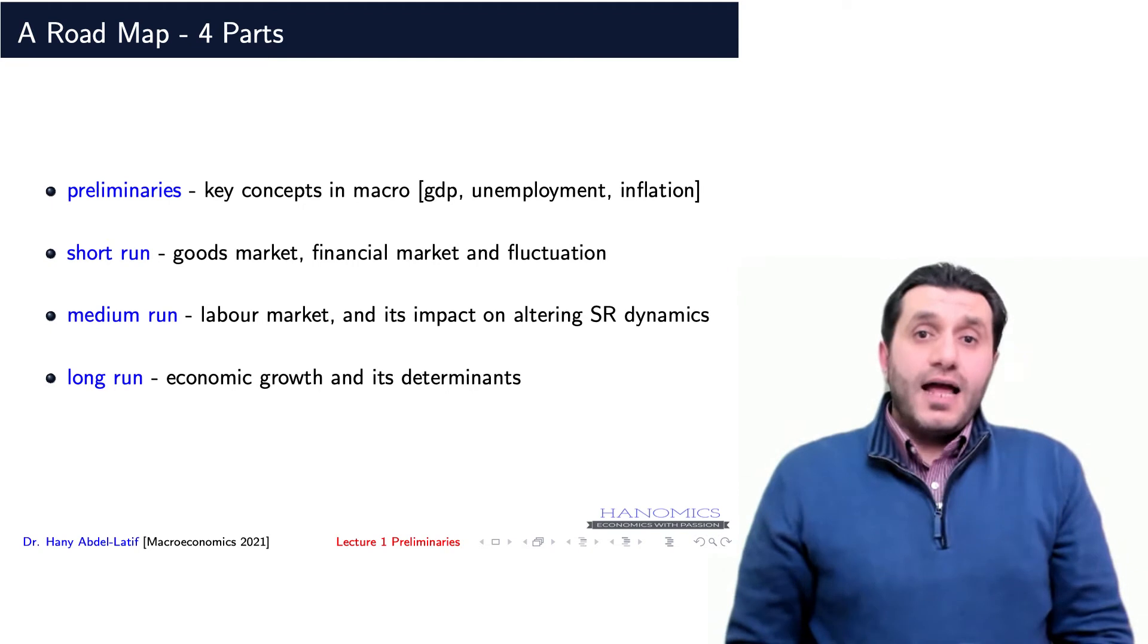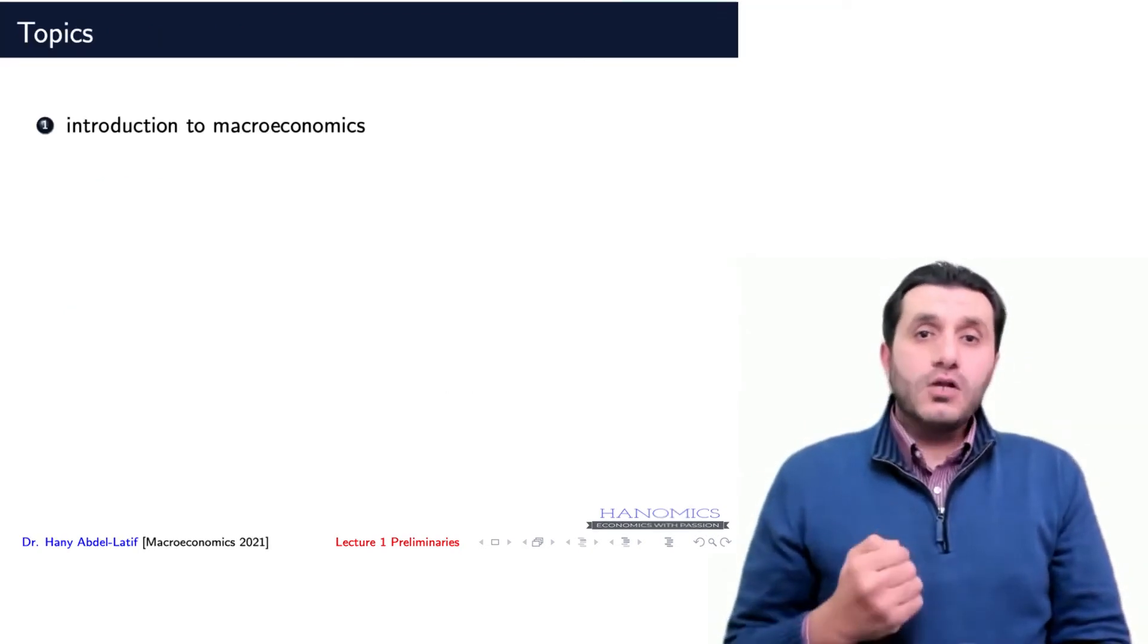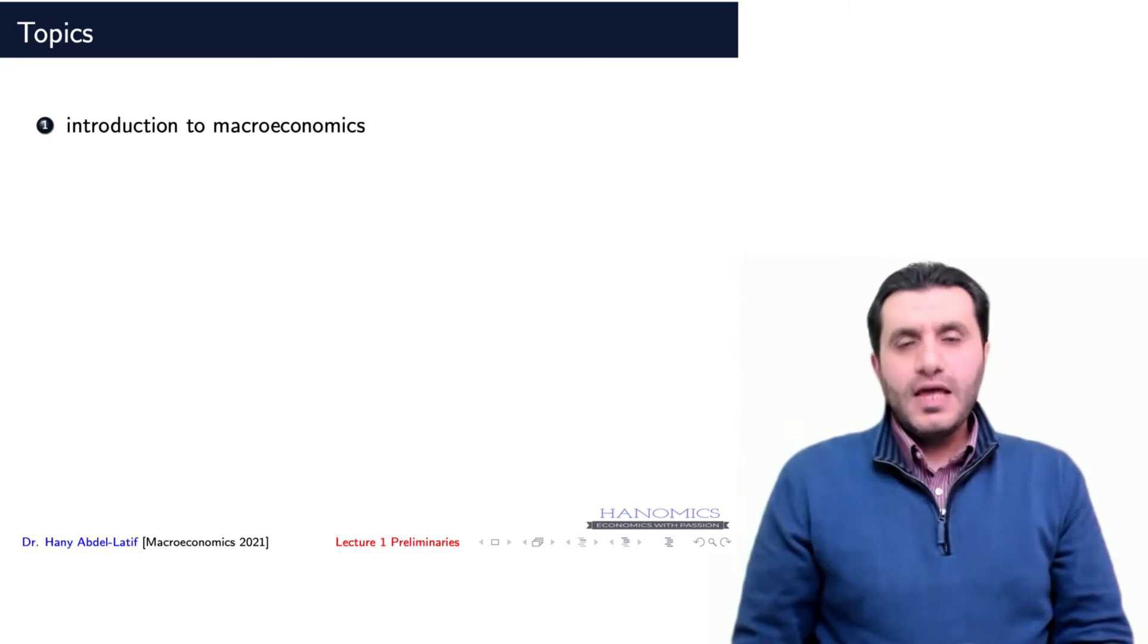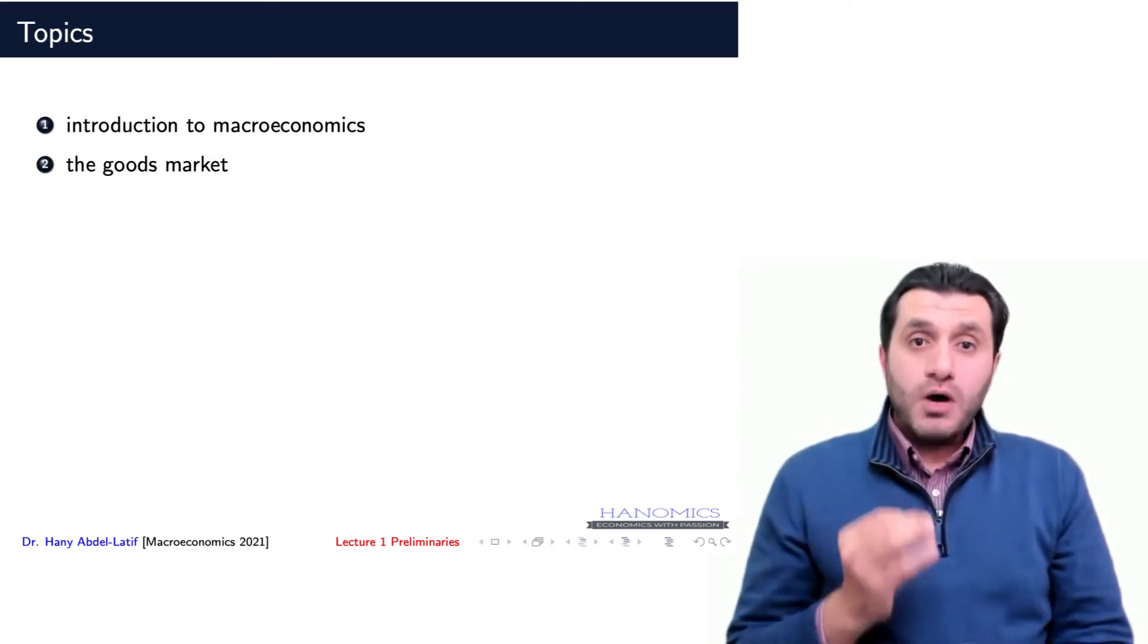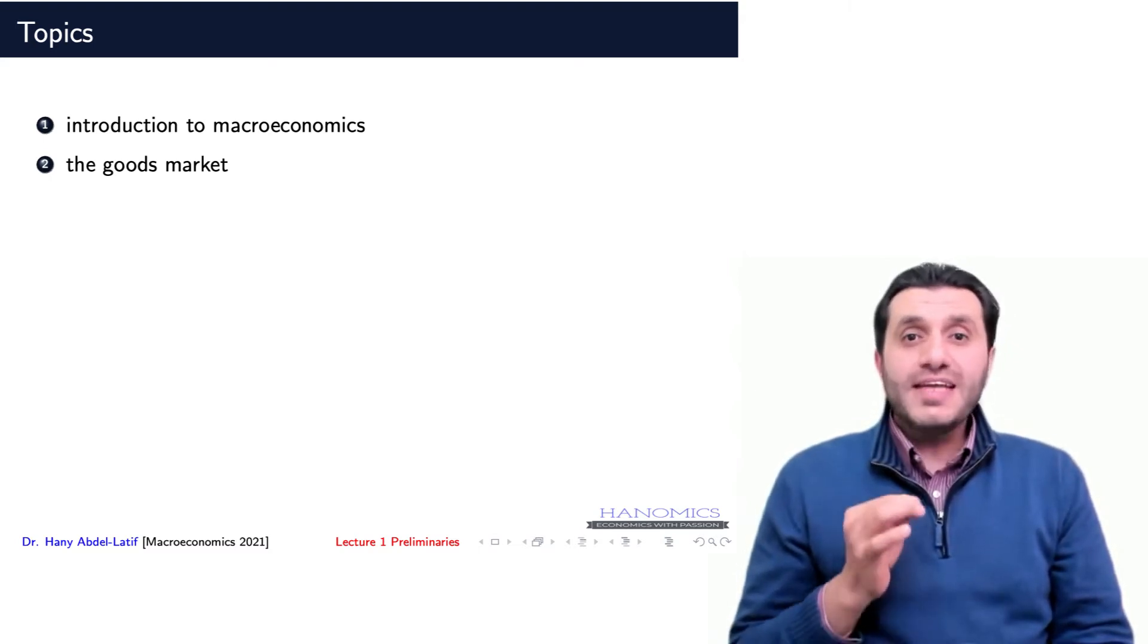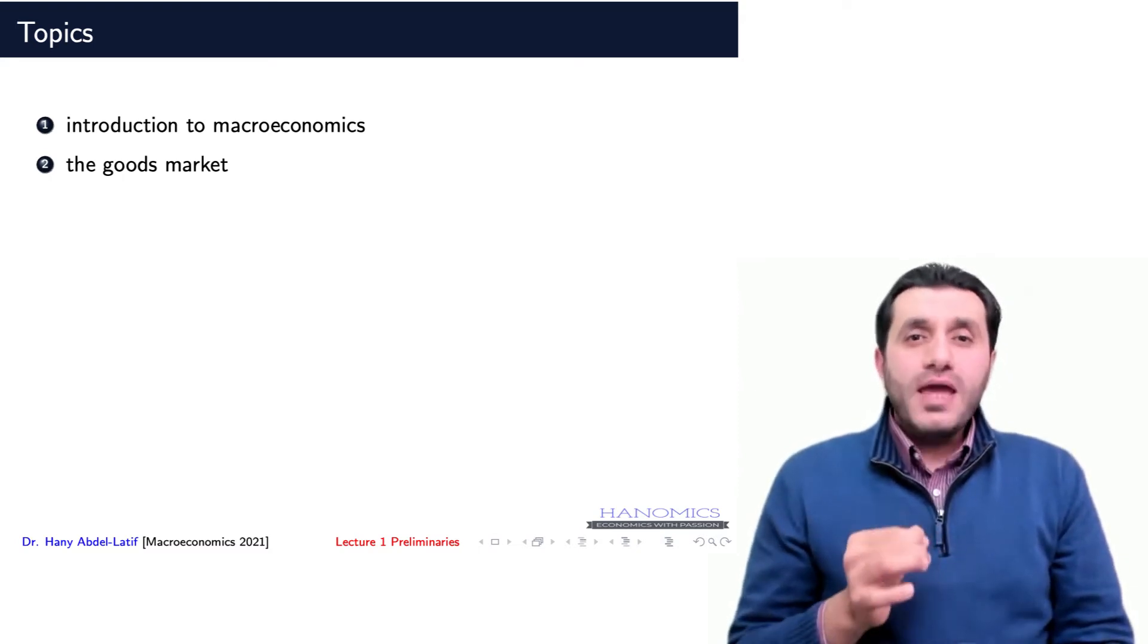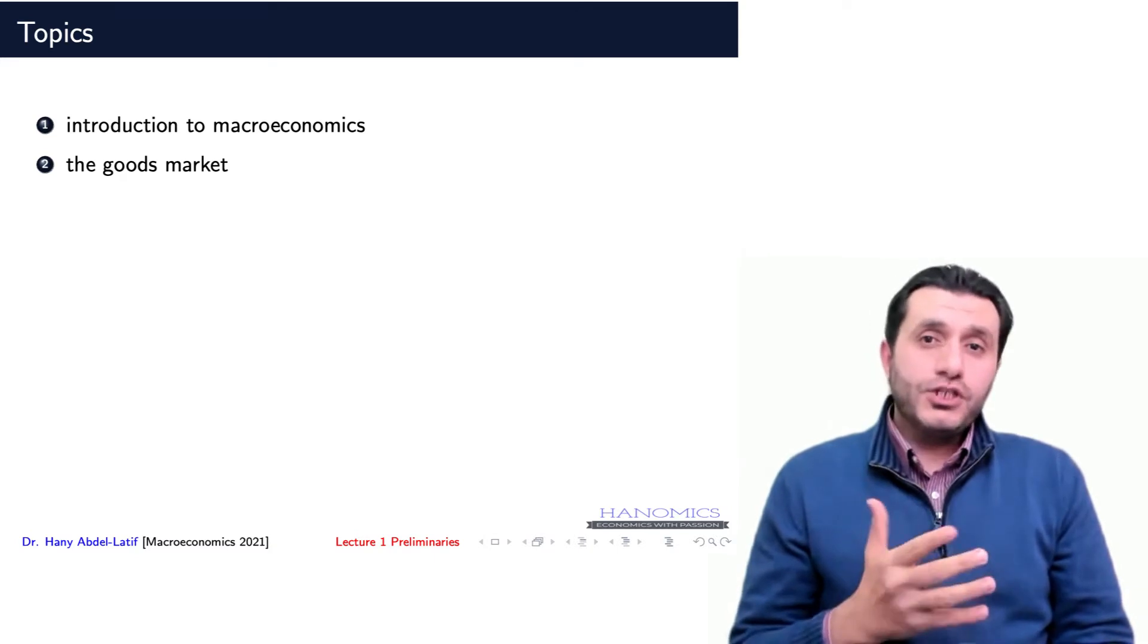Looking in more detail at these sections, we will cover 10 topics, including the introduction. The second topic focuses on goods markets. We will see what determines the aggregate demand and equilibrium condition in the goods markets. What are the main components of aggregate expenditure?